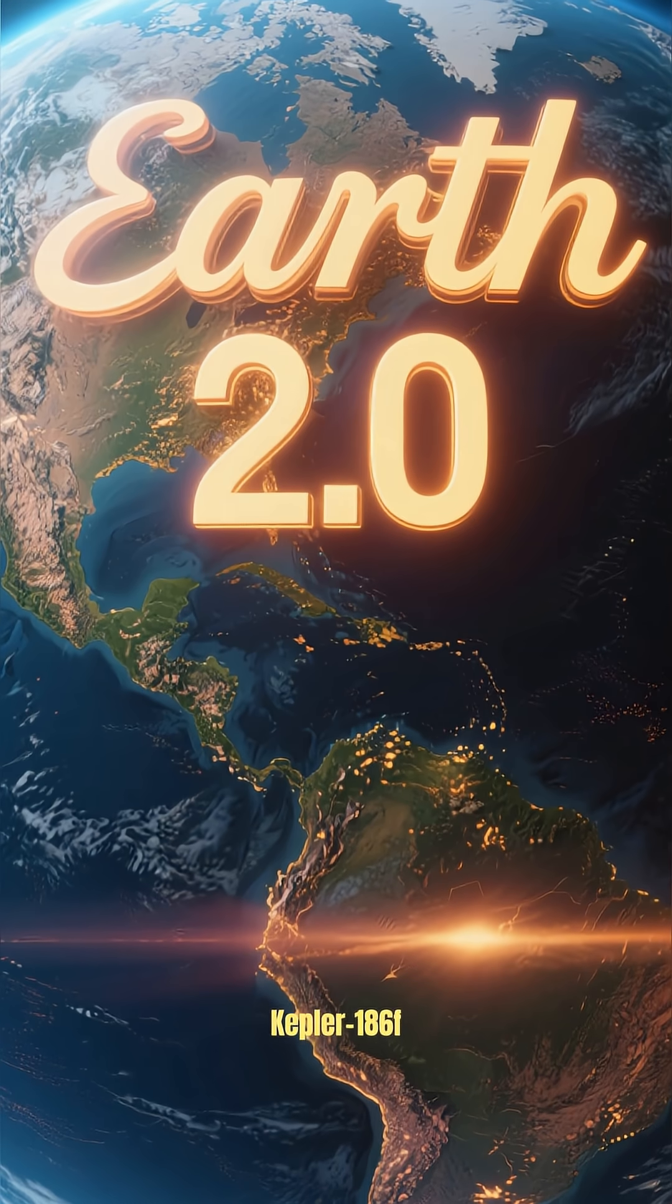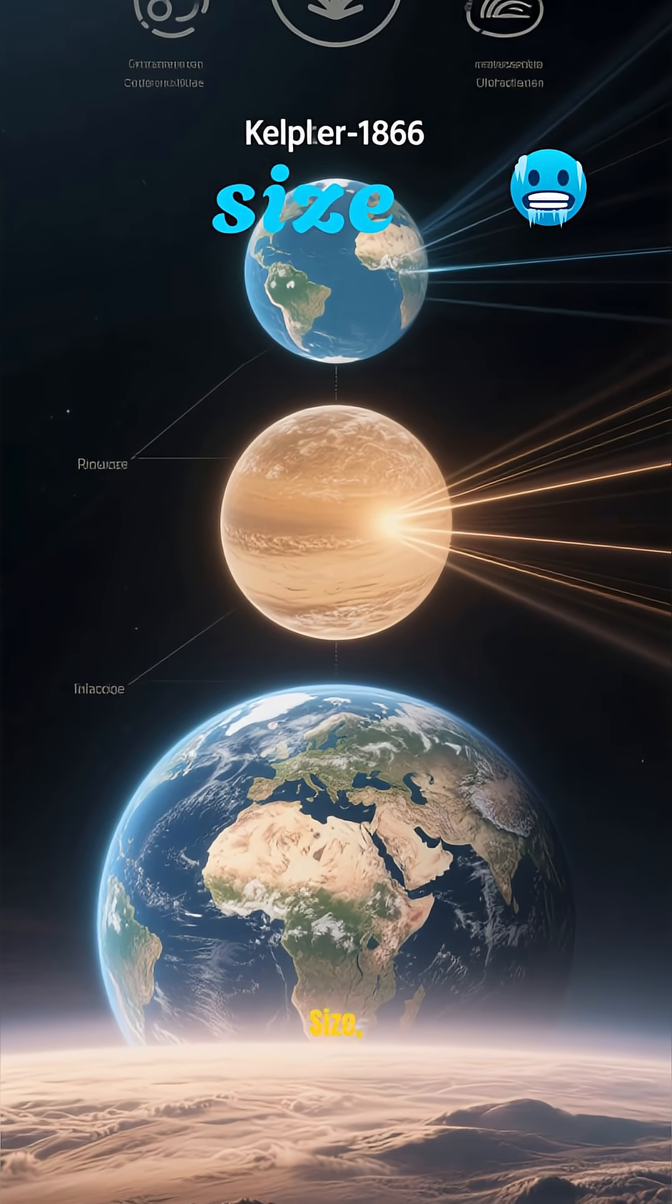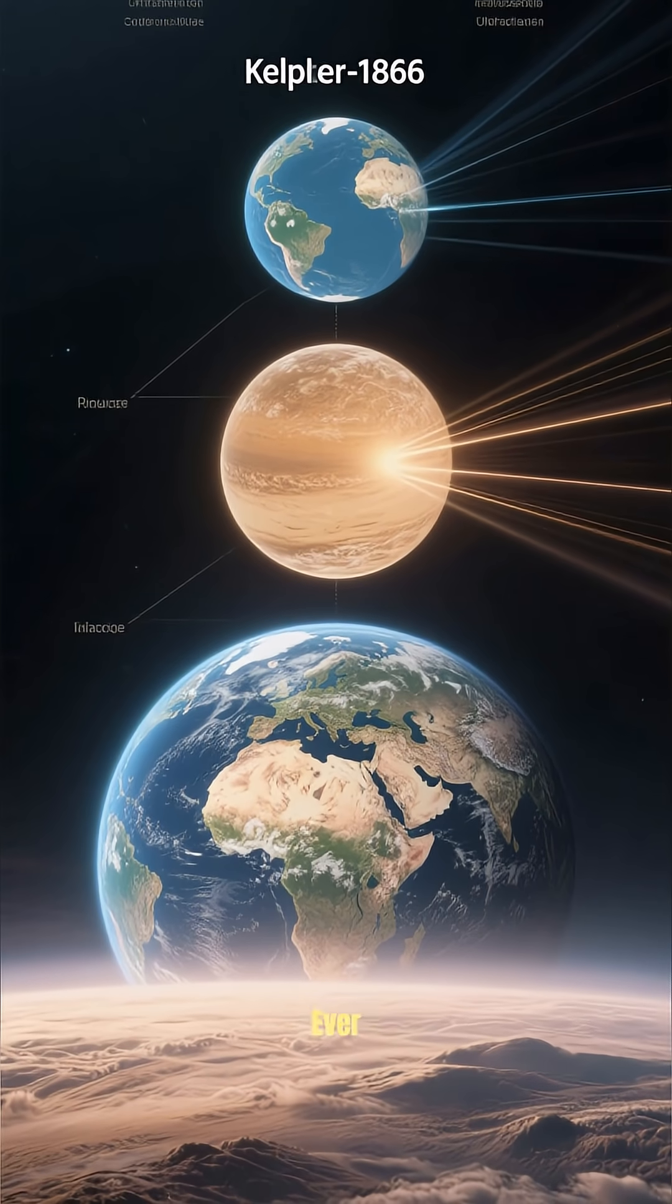They call it Kepler-186f, but to many, it's known as Earth 2.0. Why? Because its size, the light it receives, and the potential for an atmosphere make it one of the most Earth-like worlds we have ever discovered.